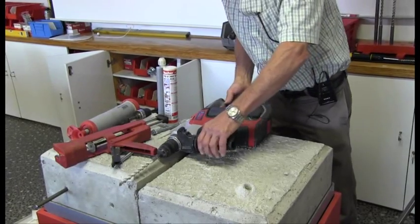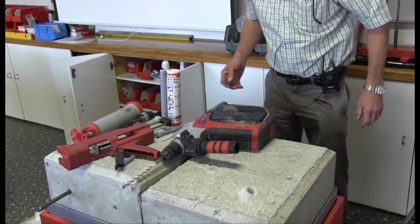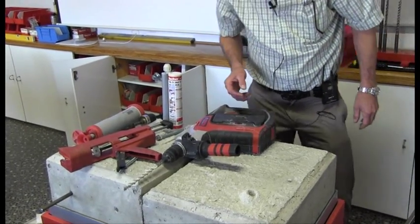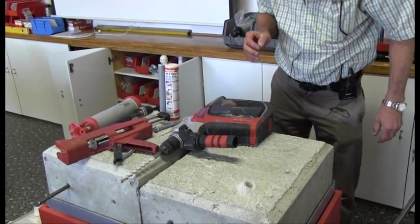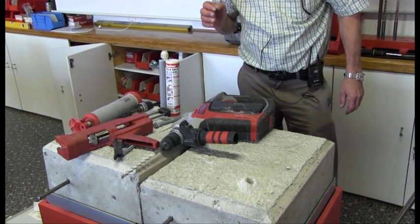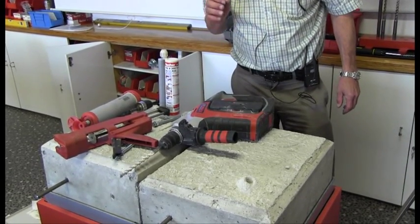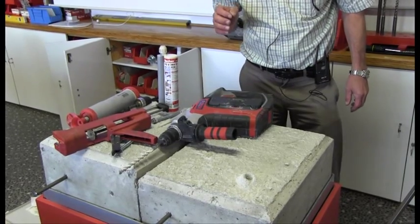The most important component, the critical area in fixing the chemical anchor is to make sure that the hole is clean. And by cleaning the hole, what you have to do is blow it out, brush it, and then blow it again.